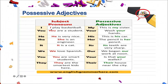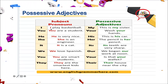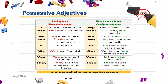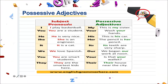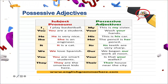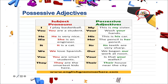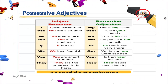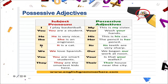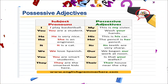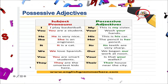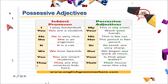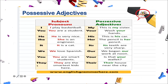Como pueden ver, en cada una de las oraciones nosotros tenemos lo que es un subject pronoun. Recuerden que I, you, he, she, it lo utilizamos para hablar en singular. Y we, you, they lo utilizamos para hablar en plural.